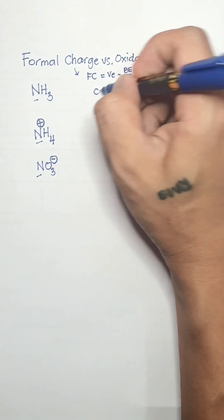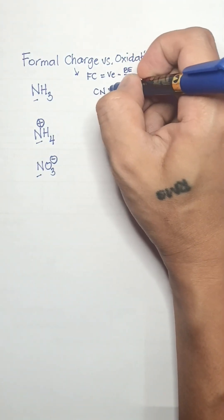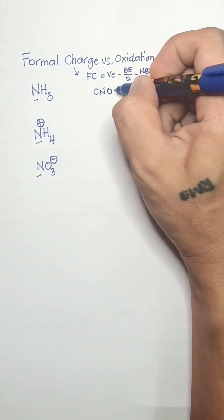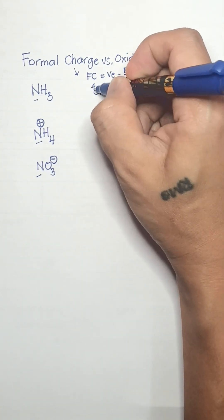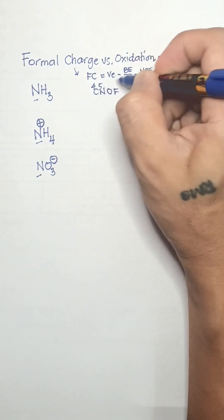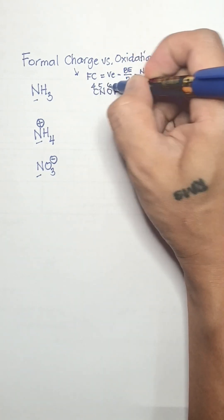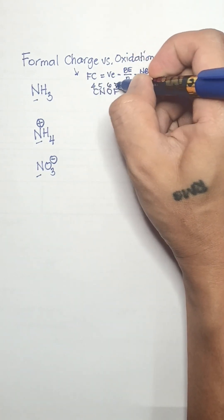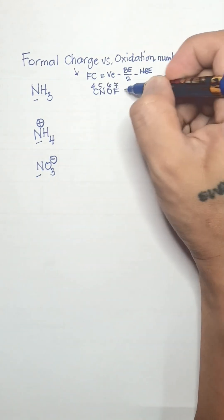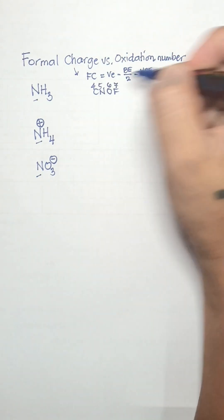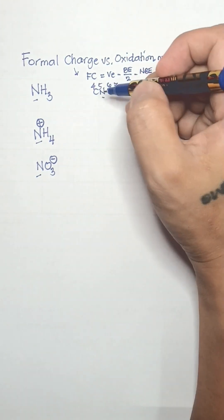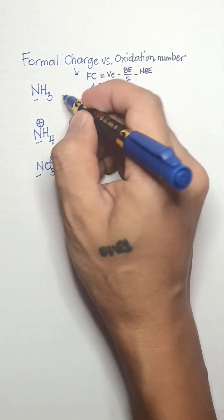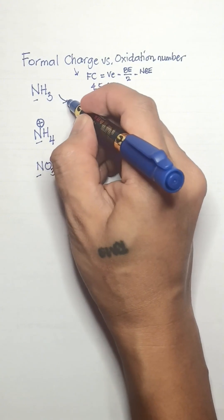Let's recall CNOF. They belong to the P block in the periodic table with corresponding valence electrons 4, 5, 6, and 7. Nitrogen in the ammonia molecule is the central atom.